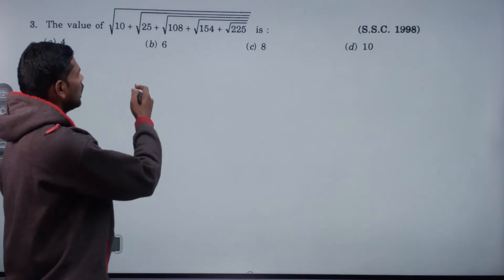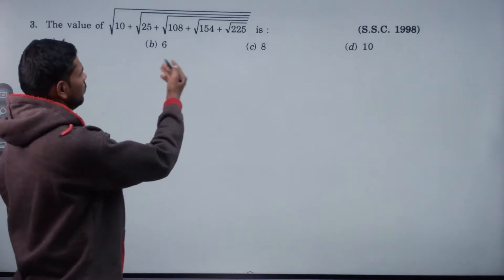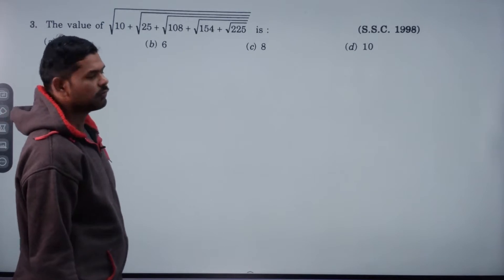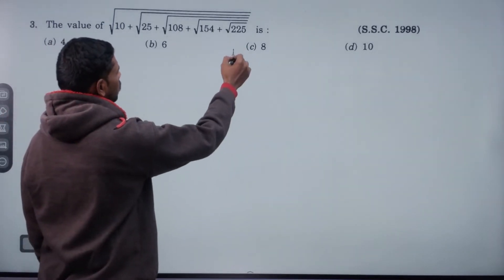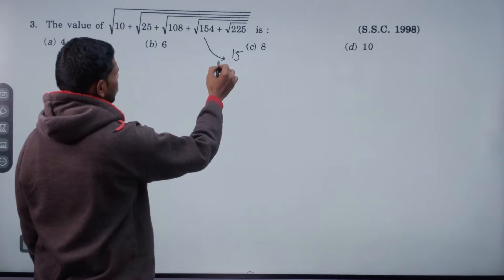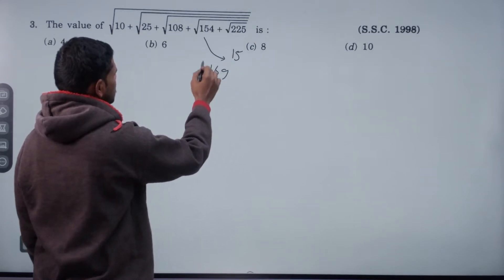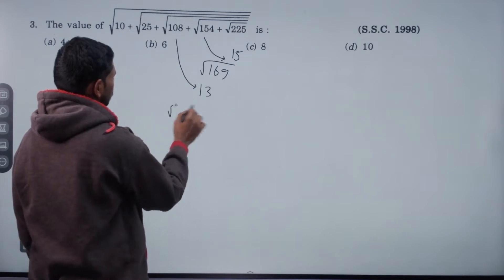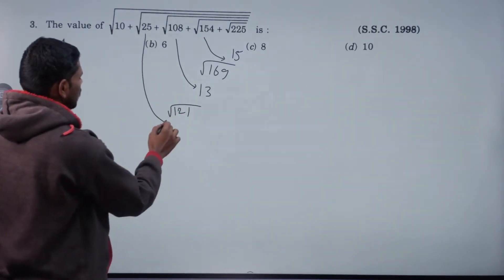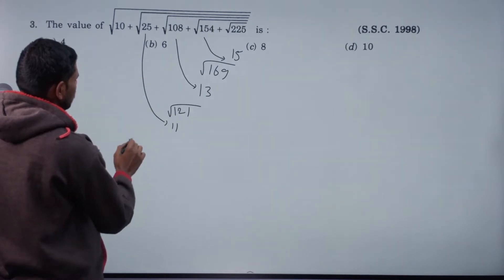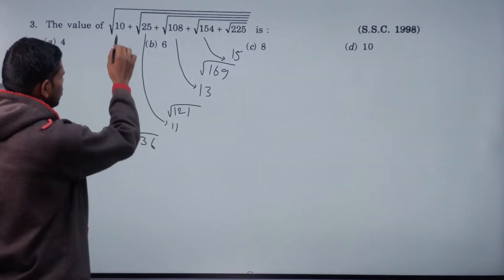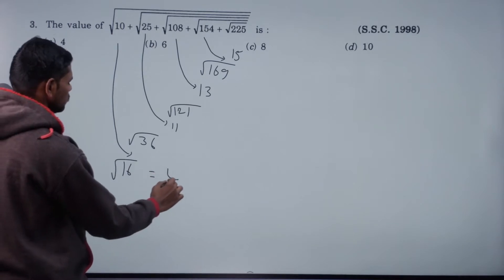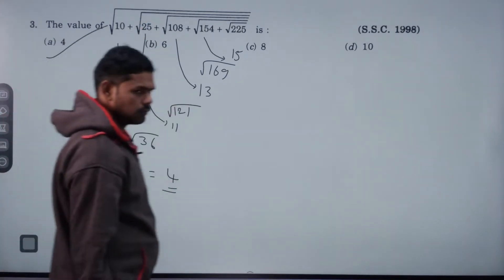The value of root of 10 plus root 25 plus root 108 plus root 154 plus root 225. Root 225 value is 15. 154 plus 15 is 169. Root 169 value is 13. 108 plus 13 is root of 121. 121 value is 11. 25 plus 11 is 36. Root 36 value is 6. 6 plus 10 is 16. Root 16 value is 4.